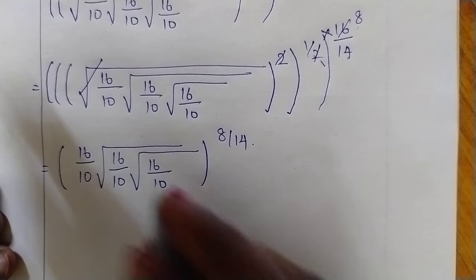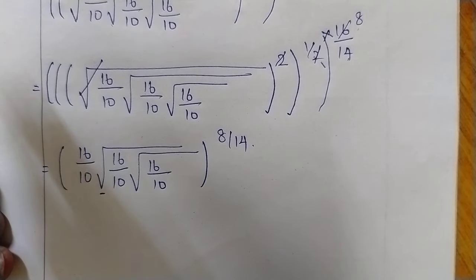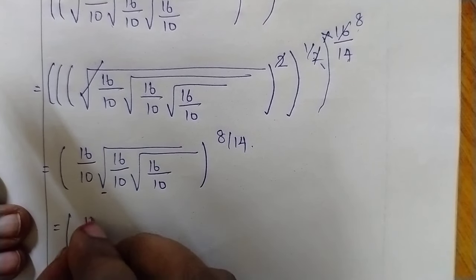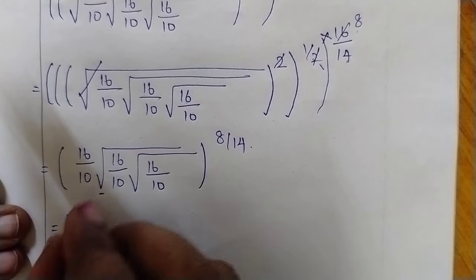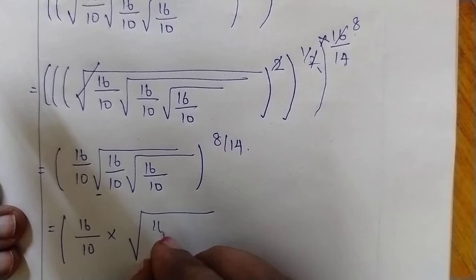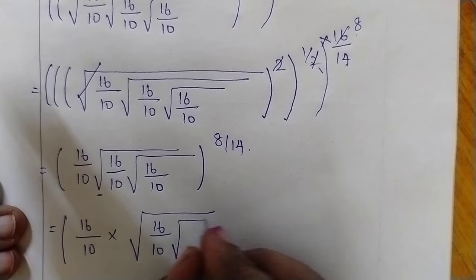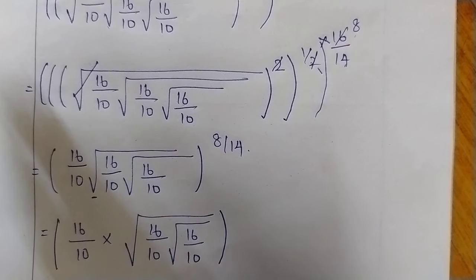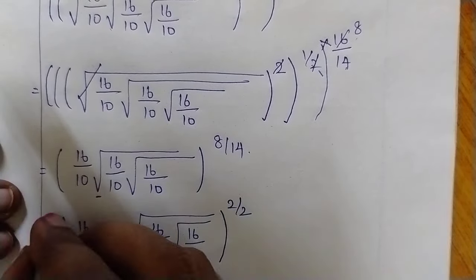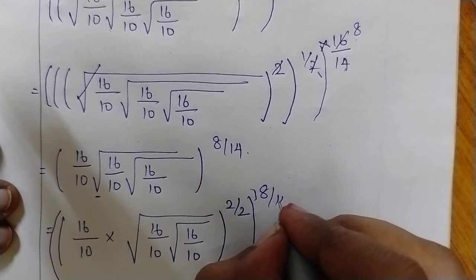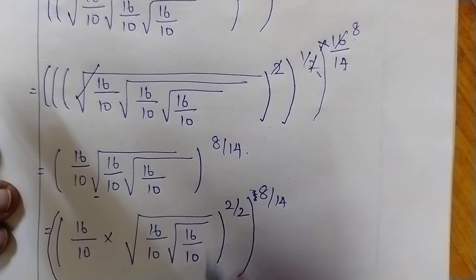Now we need to remove this square root. What we have to do? We again need to raise to the power 2 by 2. Therefore, just split this right — 16 by 10 into a number term and a square root term — and split and write for convenience. Then rise to the power of 2 by 2, and we need to raise to the power 8 by 14 which we already have.